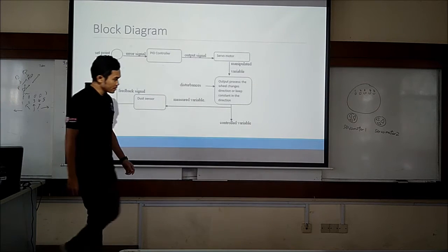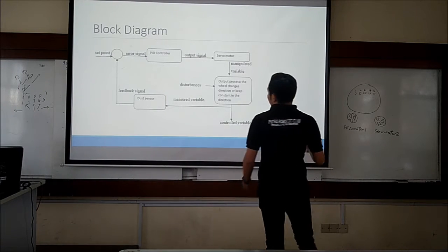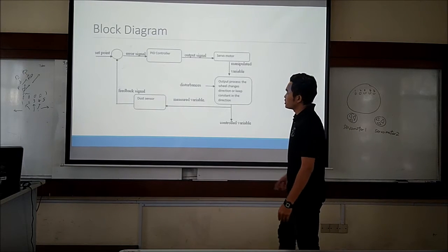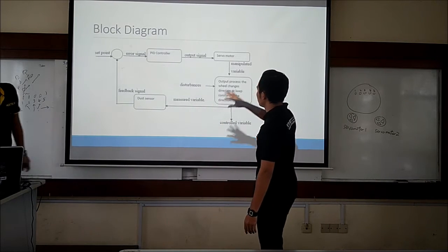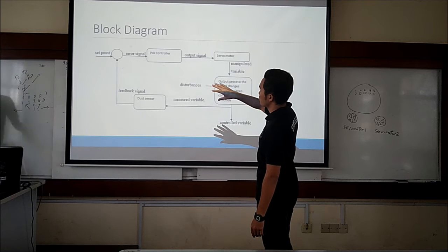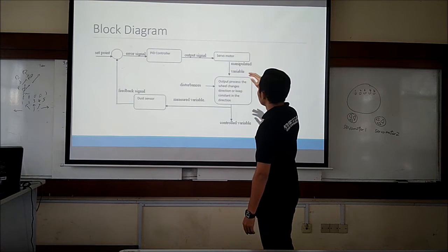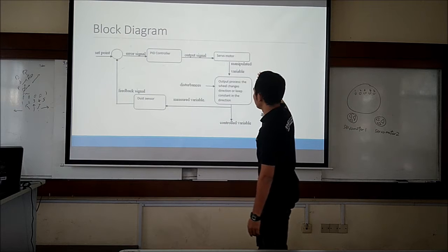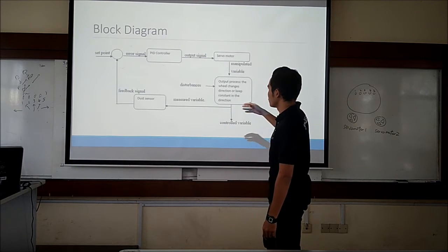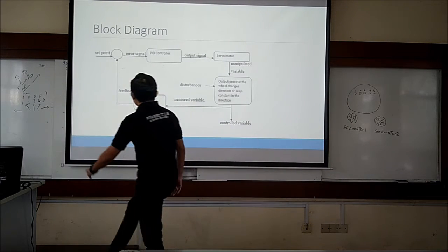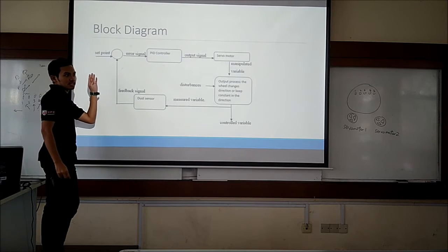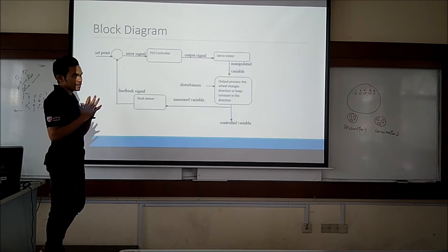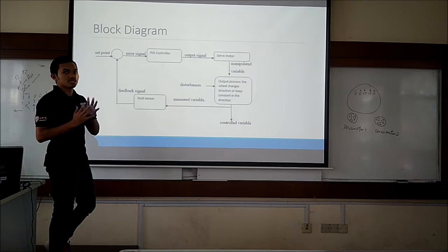Let's continue. This is a plot diagram for our robot. This is a simple project. First, we have a controller. It is a mobile drone. The set point — this robot has five sensors.